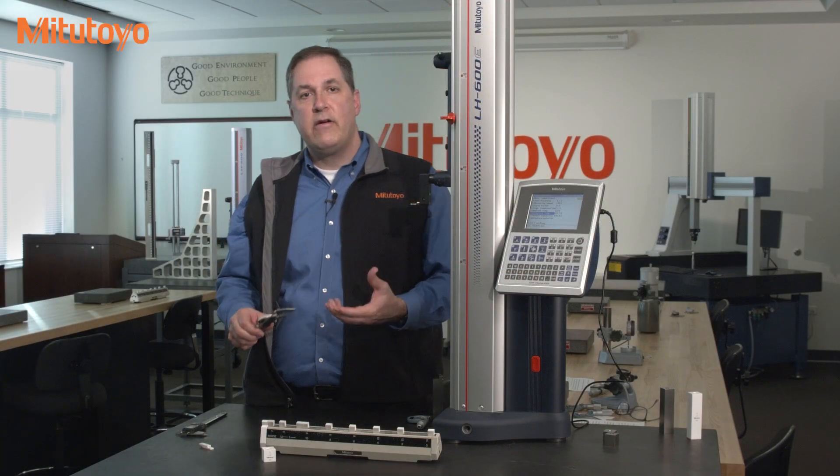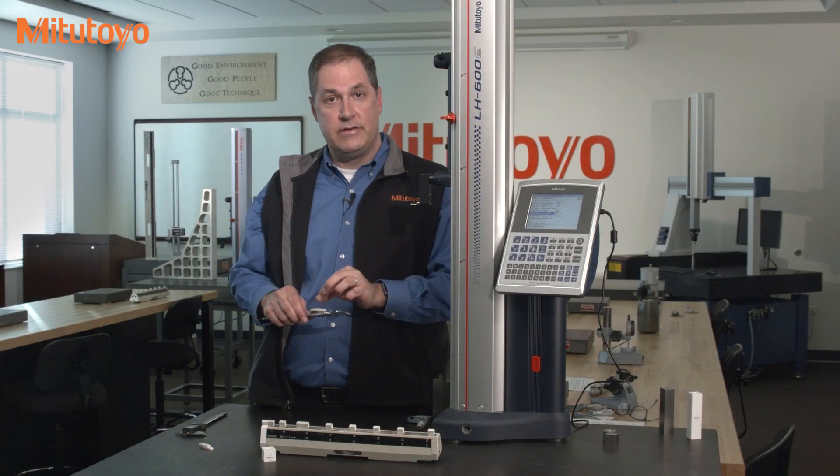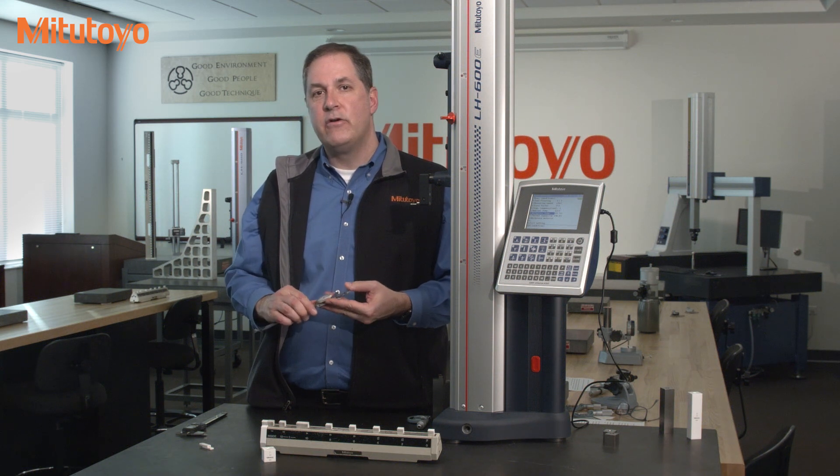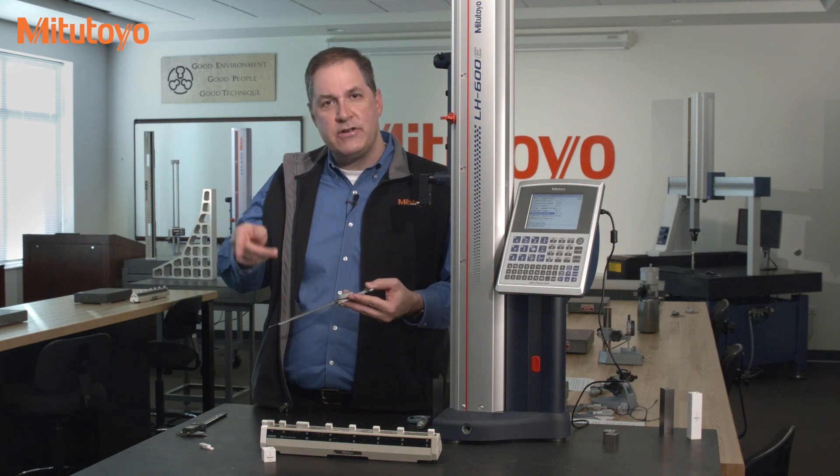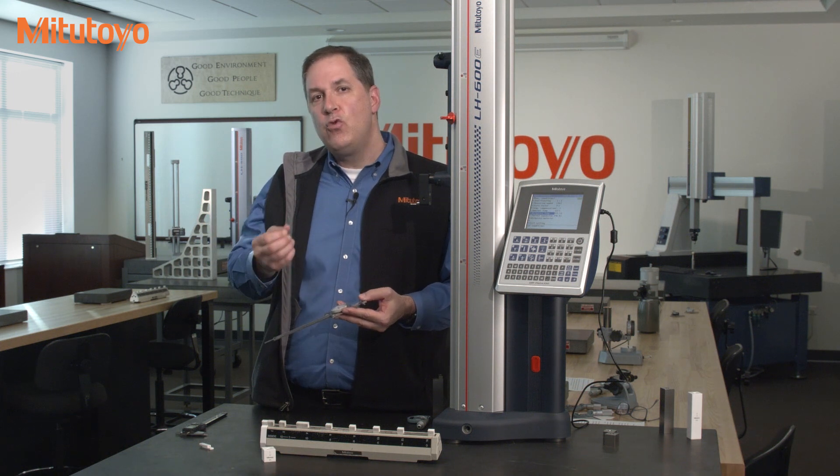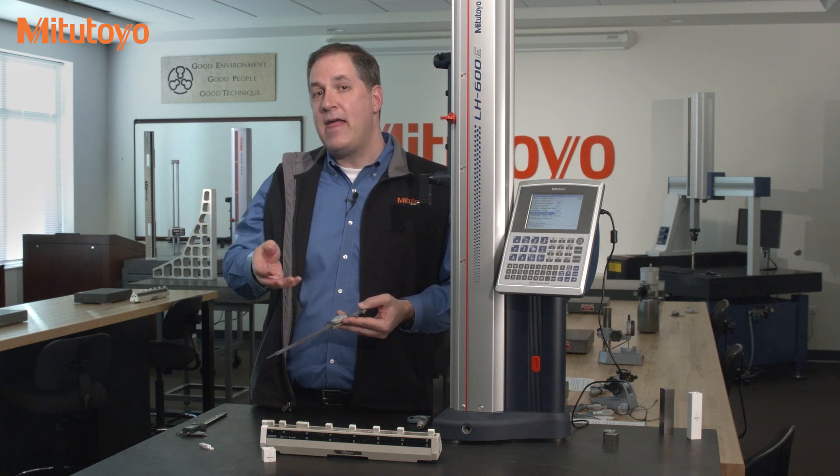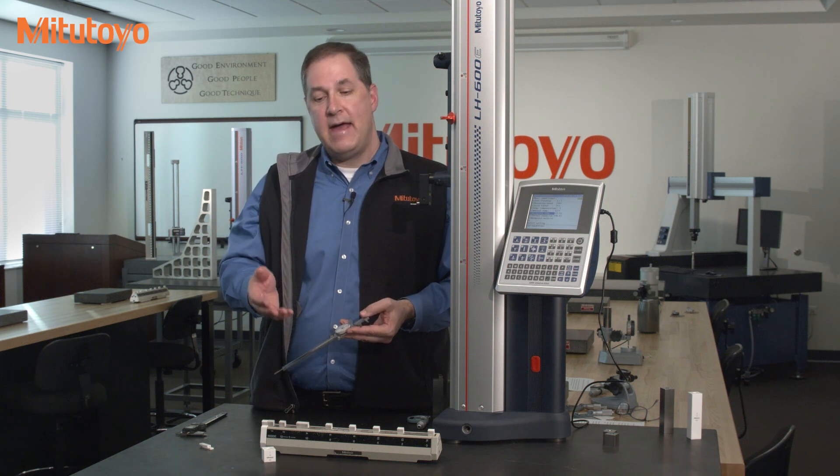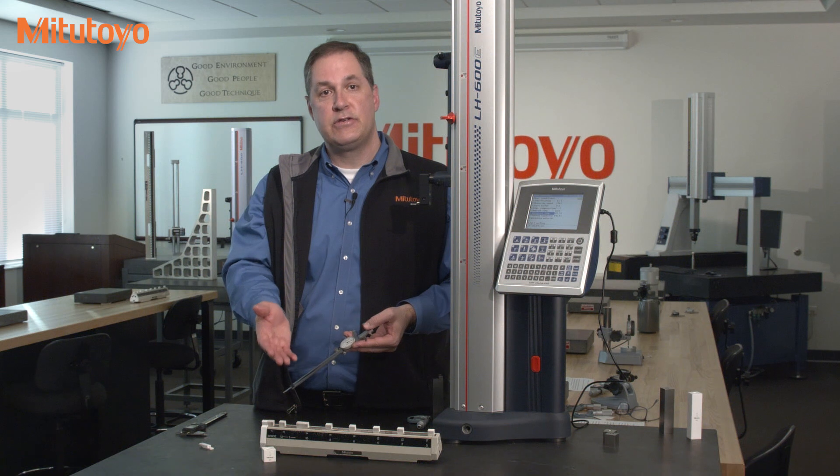Now dial calipers use little gears inside, and the gears can wear. It's possible for there to be errors within a rotation of the dial that you won't see if the calibration method results in the pointer always being at the twelve o'clock position like you just saw.